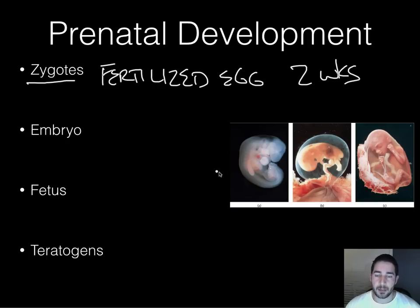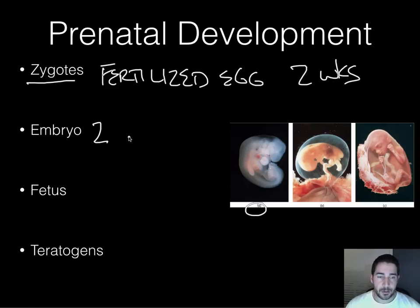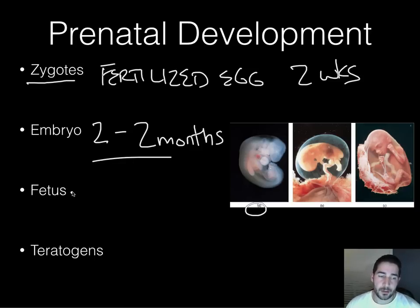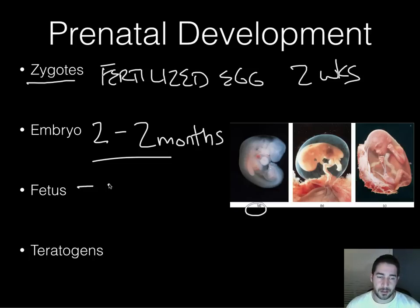By two weeks it's called an embryo. This is a picture of an embryo right here. The embryo stage is from about two weeks to two months. And then at two months it becomes a fetus — we just call it a fetus from two months all the way to birth.